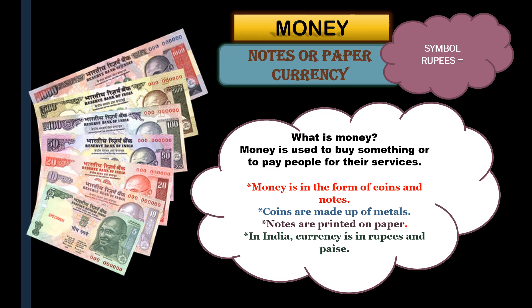Money – Notes or paper currency. Dear students, in this picture you can see some notes of Rs. 5, Rs. 10, Rs. 20, Rs. 50, Rs. 100, Rs. 500 and Rs. 1000. Why are these called notes? Because they are made out of paper. So the other name of notes is paper currency. These are the Indian currencies.